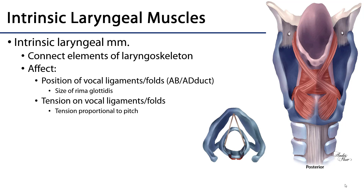In terms of position, the muscles may either abduct or adduct. Abducted folds lead to a larger rima glottidis, whereas adducted folds lead to a narrower rima glottidis. In terms of tension, it's best to understand that tension is proportional to pitch or frequency: the greater the tension, the higher the pitch; the lower the tension, the lower the pitch.